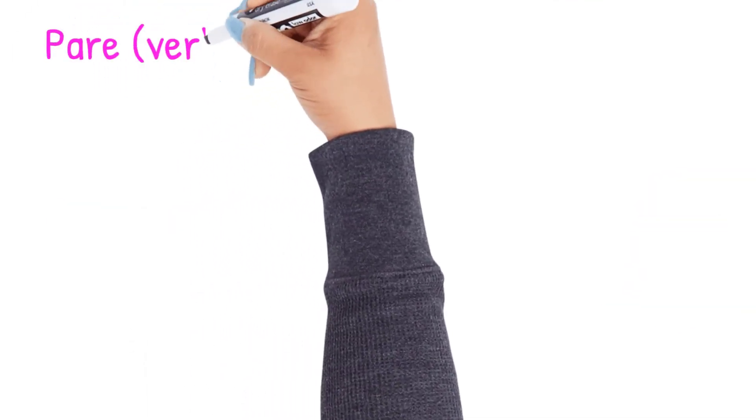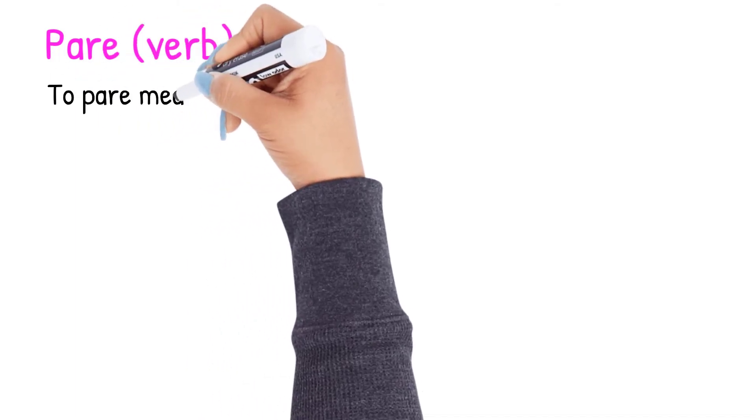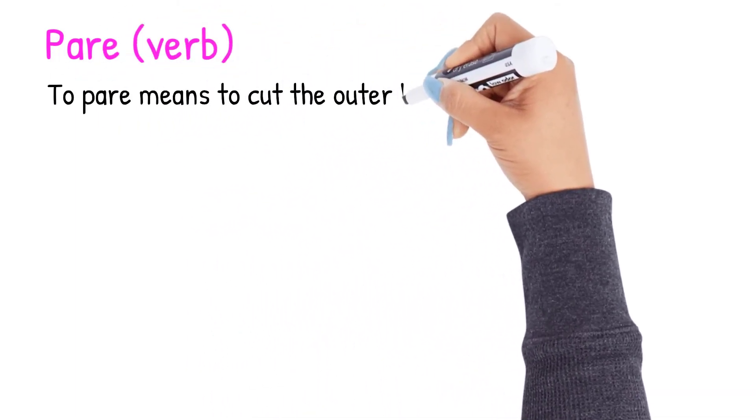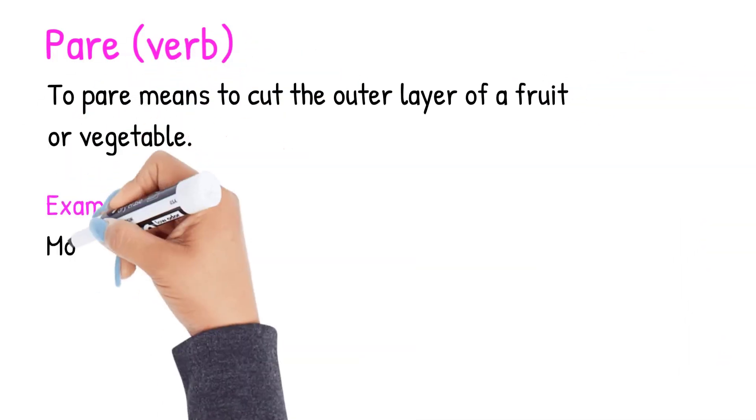Now let's review the word pare spelled P-A-R-E. Pare is a verb. It means to cut the outer layer of a fruit or vegetable.